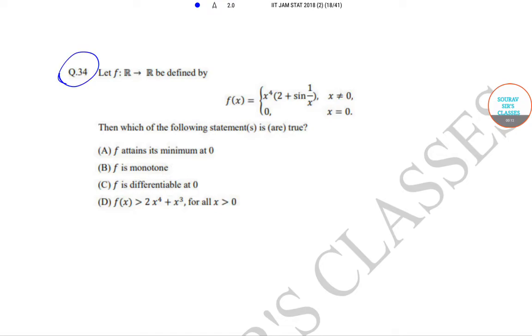In question number 34, let f be a function from R to R defined by f(x) equals x to the power 4 times 2 plus sine of 1/x when x is not equal to 0, and f(x) equals 0 when x equals 0.